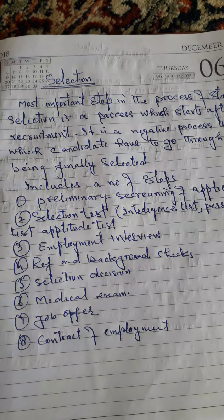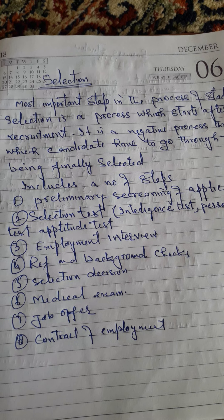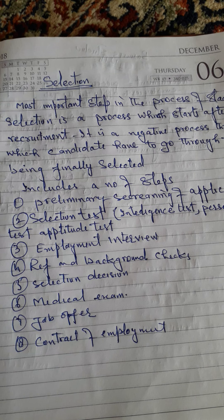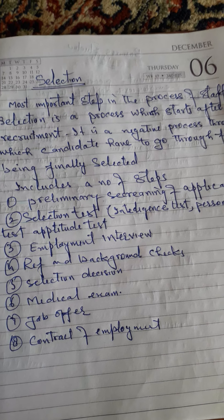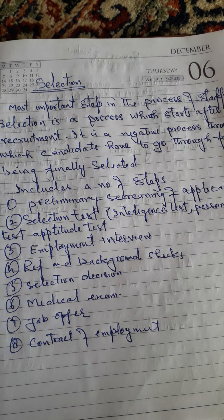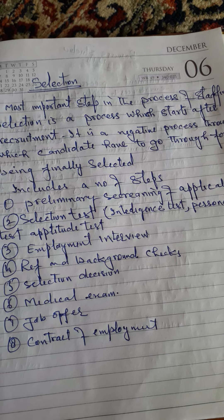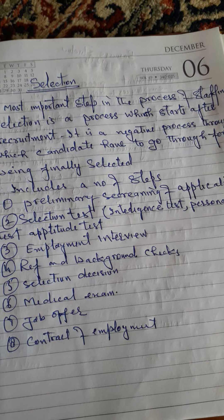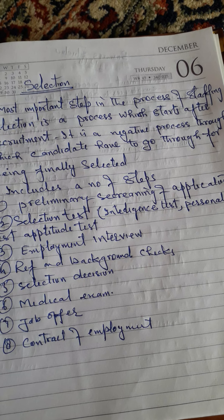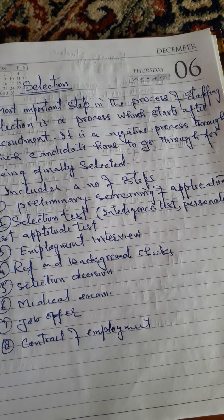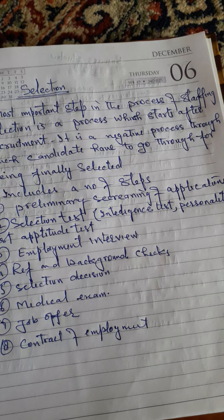There are various steps in the selection process. The selection procedure consists of a series of steps by which additional information is secured about an applicant. It may be compared to a series of barriers which the candidate is required to cross before he is finally selected.